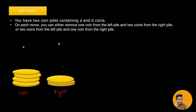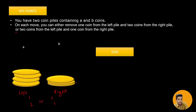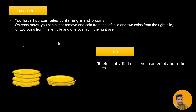On each move we can either remove one coin from the left pile and two coins from the right pile, or two coins from the left pile and one coin from the right pile. We need to keep doing this until we have emptied both piles. Our task is to efficiently find out if we can empty both piles — if we are able to, print yes, otherwise no.